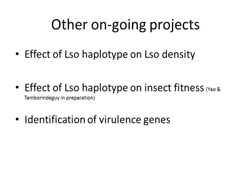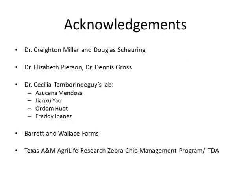Other ongoing projects: we are looking at the effect of haplotype on LSO density, the effect of LSO haplotype on insect fitness (that's the work of Dr. Yao), and we are starting to work on identifying genes that might be involved in this difference in disease between A and B — Arabin has a poster showing some of this work. Acknowledgements: this work was done in collaboration with Dr. Miller and Douglas Shearing, and we are collaborating with Dr. Pearson and Dr. Gross. The Tamborindegui lab — Dr. Mendoza and Yao, and PhD students Odom and Freddy — are taking care of most of the colony. Some experiments were conducted at Barrett's and Wallace Farms. This project was supported by the Texas A&M AgriLife Research Zebra Chip Management Program.